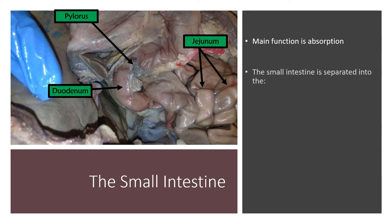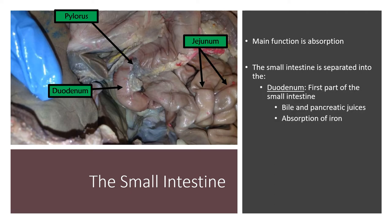The small intestine is divided into three parts. The first is the duodenum, which receives chyme from the stomach. It also receives bile from the common bile duct — bile breaks down fat — and it receives pancreatic juices from the pancreatic duct, which break down proteins and carbohydrates. The duodenum is primarily the site of iron absorption.